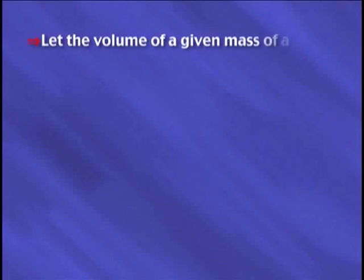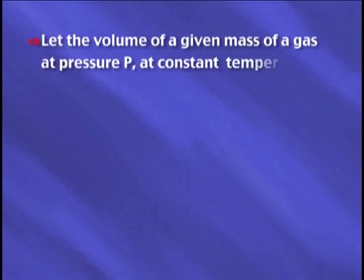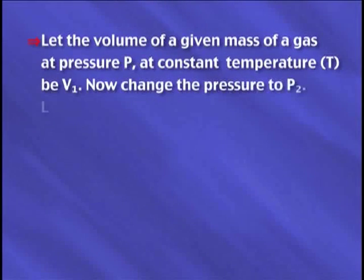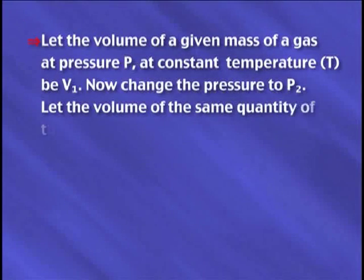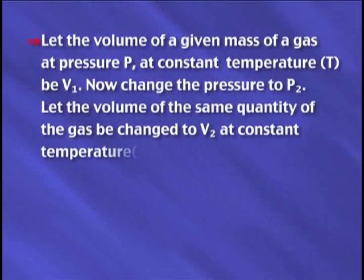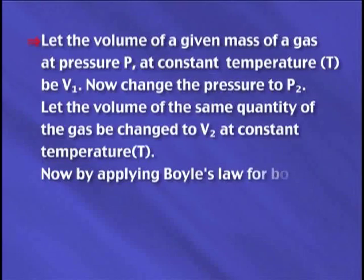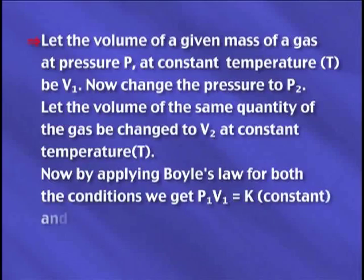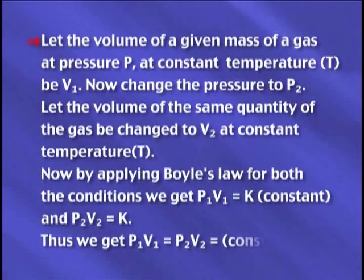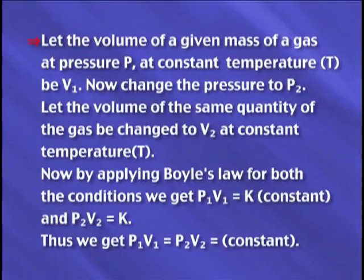Boyle's law equation can also be applied for the same quantity of gas under two different conditions. Let the volume of a given mass of gas at pressure P1 and constant temperature T be V1. If pressure changes to P2, let the volume change to V2 at the same constant temperature T. Applying Boyle's law for both conditions, we get P1V1 equals K and P2V2 equals K. Thus, P1V1 equals P2V2 equals constant.